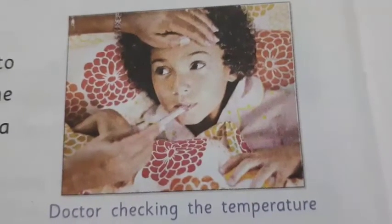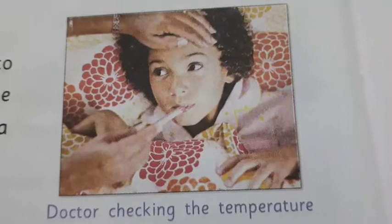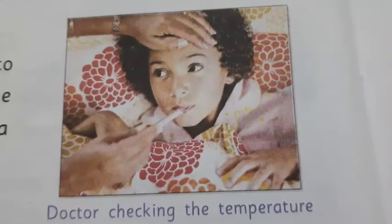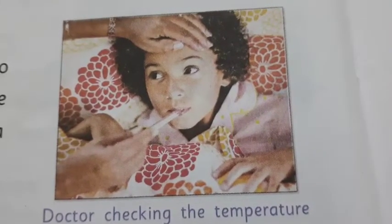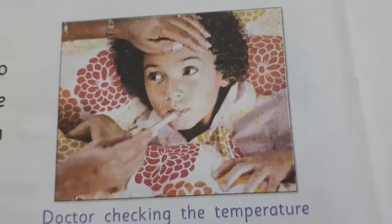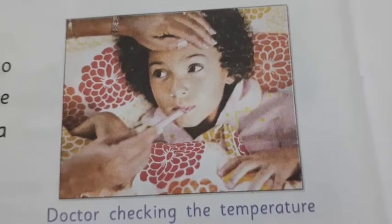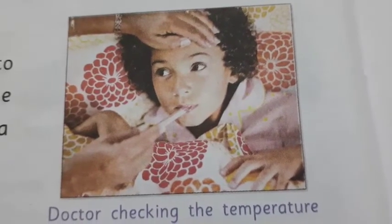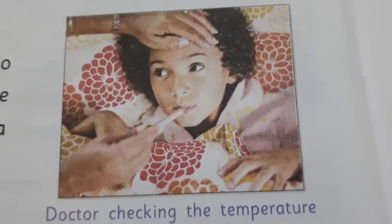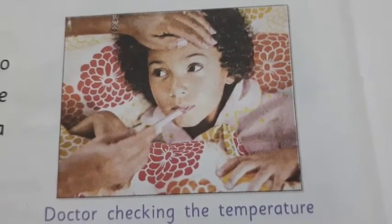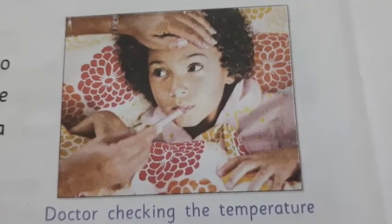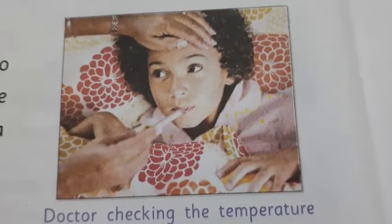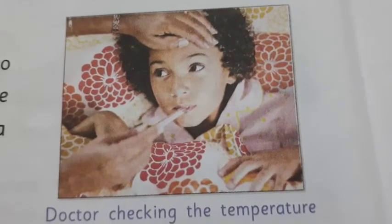A doctor uses a clinical thermometer to measure the temperature of a patient if he or she has a fever. The temperature of a normal human body is 37 degree Celsius or 98.4 degree Fahrenheit.